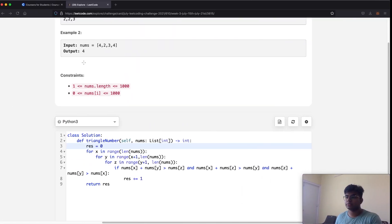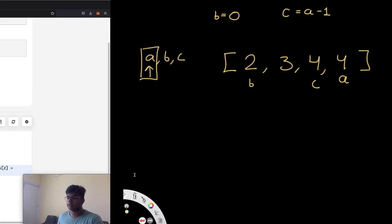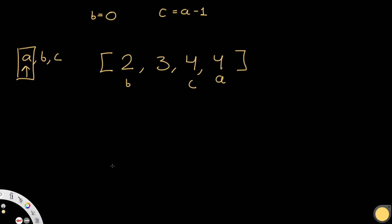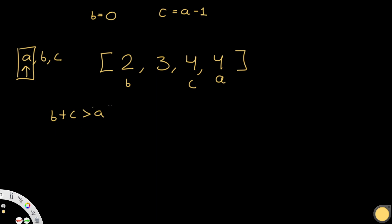We only need to check if b+c > a, not all three conditions. The reason is that since a is always the greatest value (c is at a-1 and b is at 0), the other conditions b+a > c and a+c > b are automatically satisfied. So we just check b+c > a.